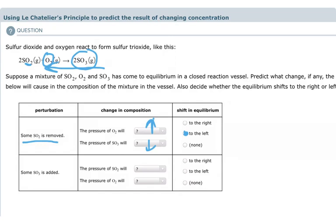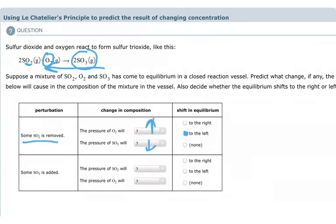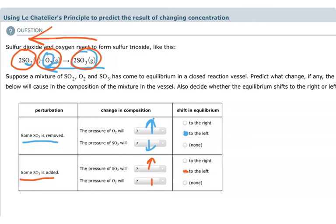The pressure of our product SO3 will go down. If some SO3 is added, that's the product — increasing the concentration of product causes equilibrium to shift to the left again. Because equilibrium shifts to the left, the pressure of SO2 goes up and the pressure of O2 also goes up.